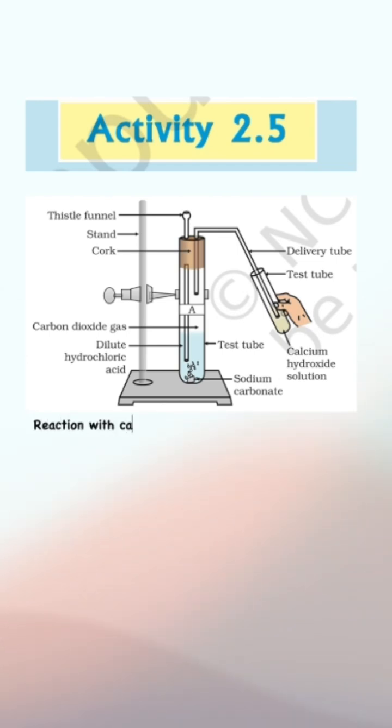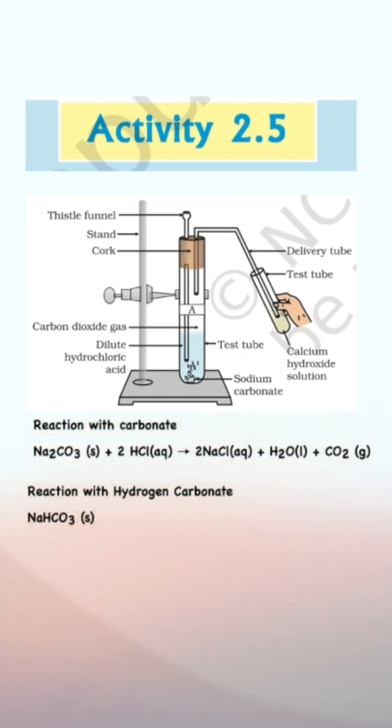The reaction with carbonate is: Na2CO3 + HCl gives NaCl + H2O + CO2. The reaction with hydrogen carbonate is: NaHCO3 + HCl gives NaCl + H2O + CO2.